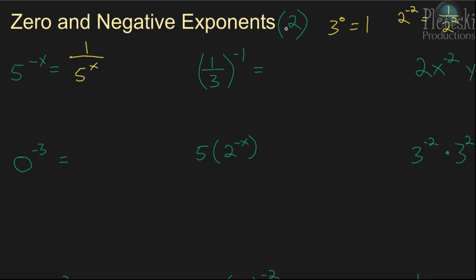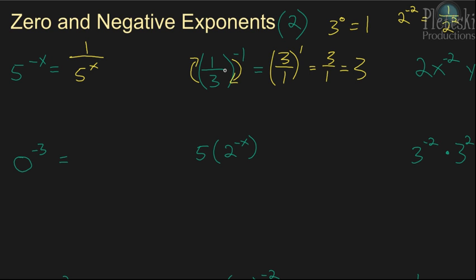The next one is 1 third to the negative 1. Now, since this has a fraction, a reciprocal, you just flip the fraction upside down. The denominator becomes the numerator, and the numerator becomes the denominator. So, we flip it upside down — it's going to be 3 over 1, raised to the positive 1, not negative 1. So, that's just 3 over 1, which is 3. So, 1 third to the negative 1 power is just 3.